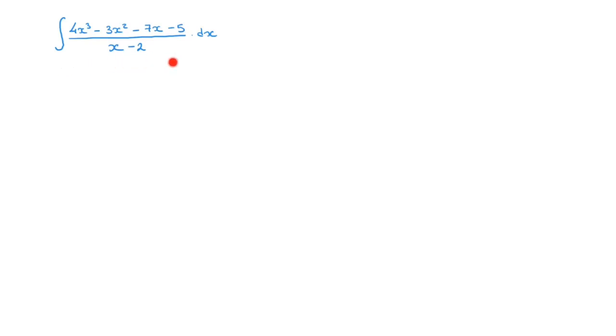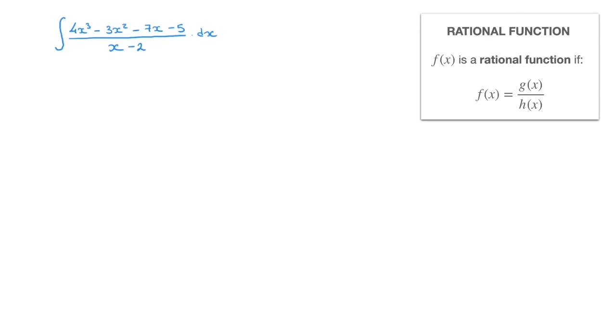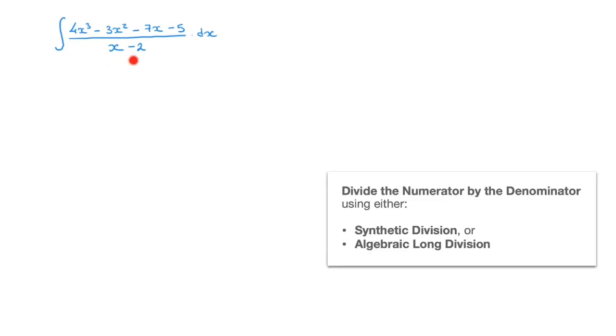Looking at this integral, we can see that we're trying to integrate a rational function, for which the numerator is a polynomial. Indeed, we're dealing with a cubic polynomial and the denominator is a linear. As soon as we have to integrate a polynomial which is being divided by a linear, we can use the method that we see here. The trick is to go right ahead and divide this polynomial by the linear.